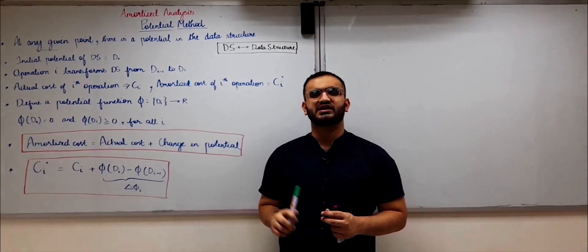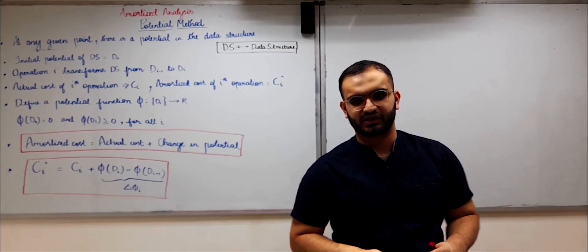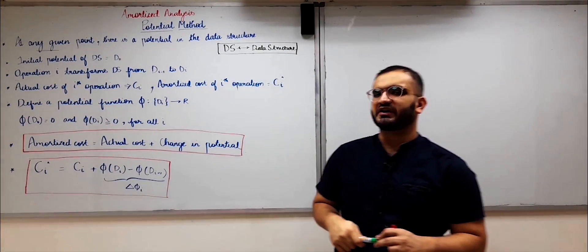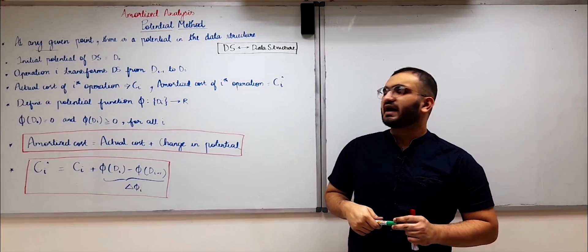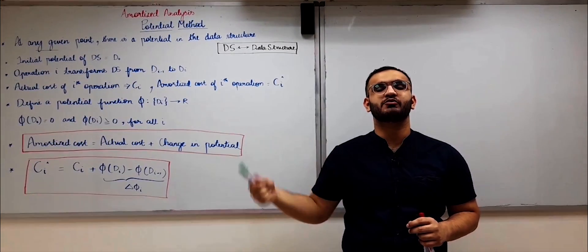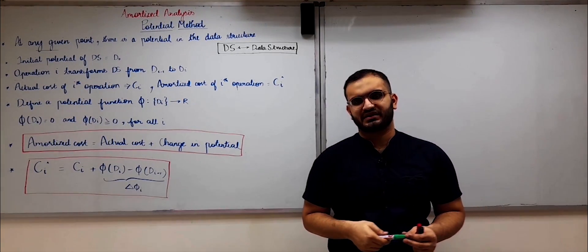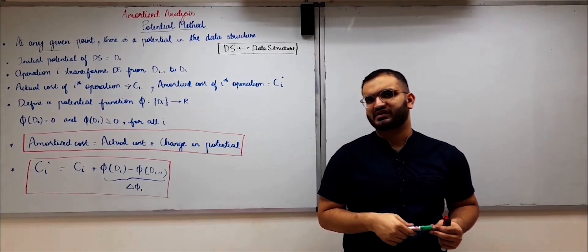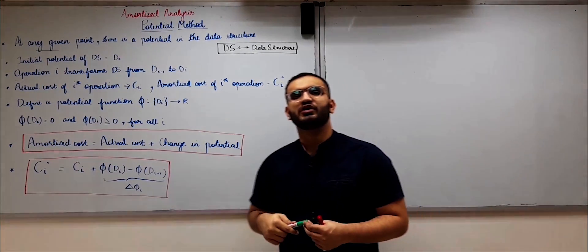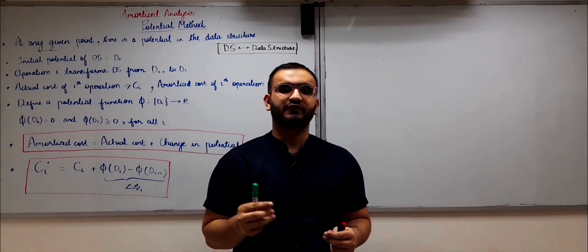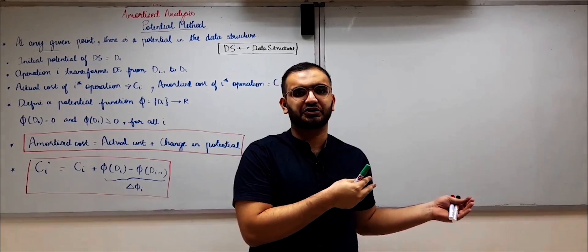In this video we are going to see the third method of amortized analysis or amortized time complexity. If you are following all my videos, this question would have arisen in your mind: why are we looking at so many methods to do the same time complexity computation? We have already learned the accounting method and the aggregate method of amortized analysis. So why again do we need the potential method? That is because there are many data structures for which the potential method can act as a better alternative rather than the other two methods.